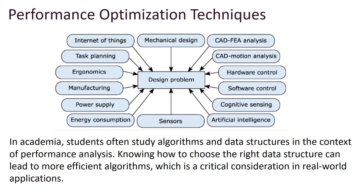Performance optimization. In academia, students often study algorithms and data structures in the context of performance analysis. Knowing how to choose the right data structure can lead to more efficient algorithms, which is a critical consideration in real-world applications.